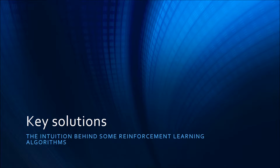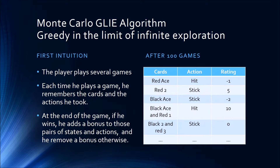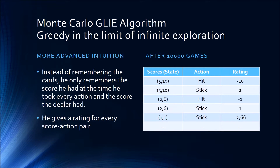I'll move on to some key intuitions behind the reinforcement learning algorithms I use. The Monte Carlo algorithm has a very simple intuition: the player plays several games, and each time he remembers the cards and the actions he took. For example, he picked a true red and he stuck, or he picked a black ace and he stuck. At the end of the game, if he wins, he adds a bonus to those state-action pairs, and removes a bonus if he loses. A more advanced intuition: instead of remembering the cards, he only remembers the score he had at the time he took each action and the dealer's score. This is equivalent — just less to memorize — and then he gives a rating for everything.